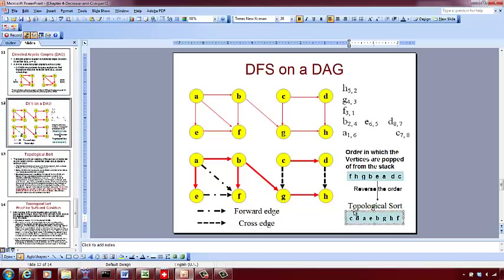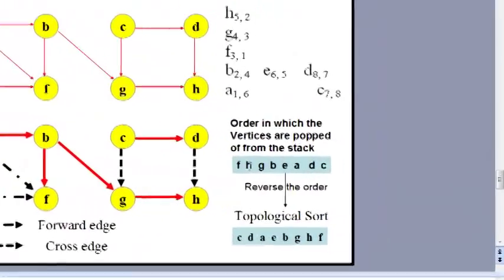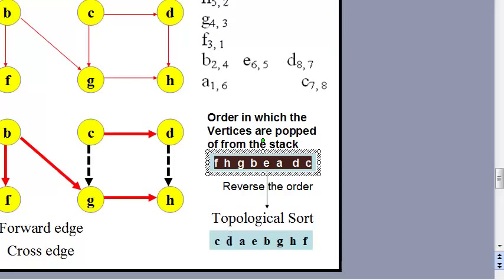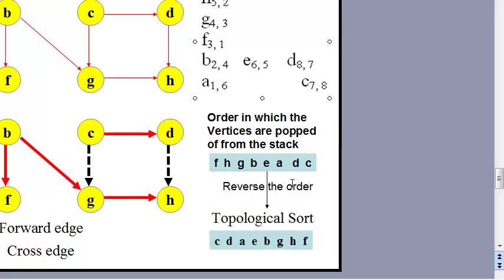If it is difficult to visualize in reverse order, write first in increasing order from F, H, and so on. But what we actually need is the vertices in the reverse order in which they have been popped out of the stack. The last node popped out of the stack is the first node on the list, and the first node popped out of the stack is the last node in the list.